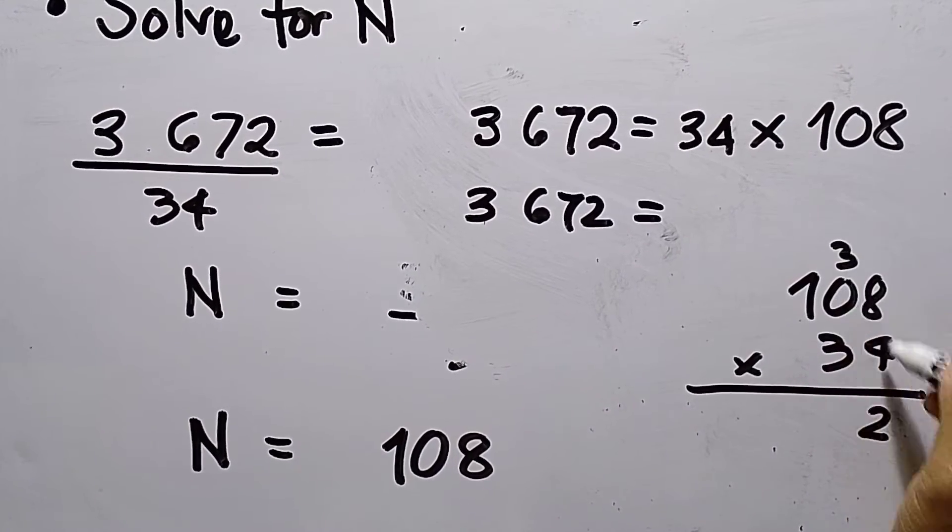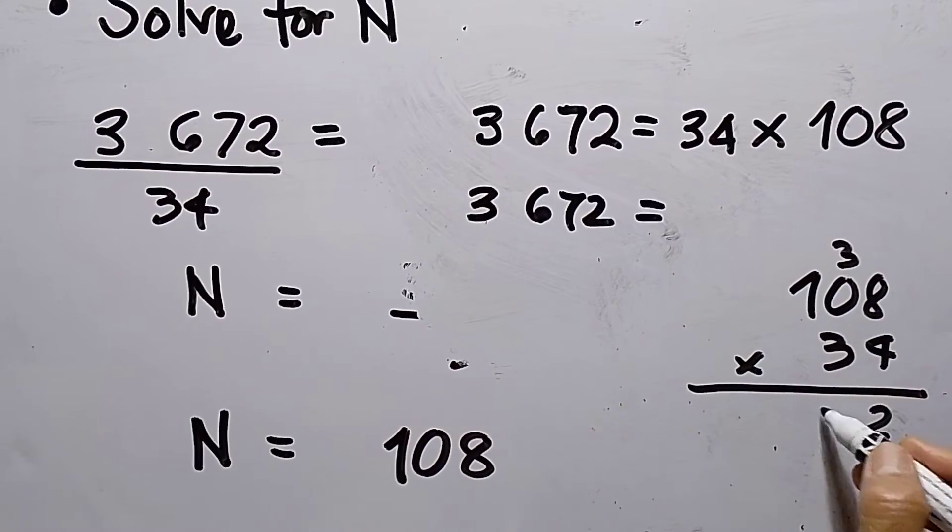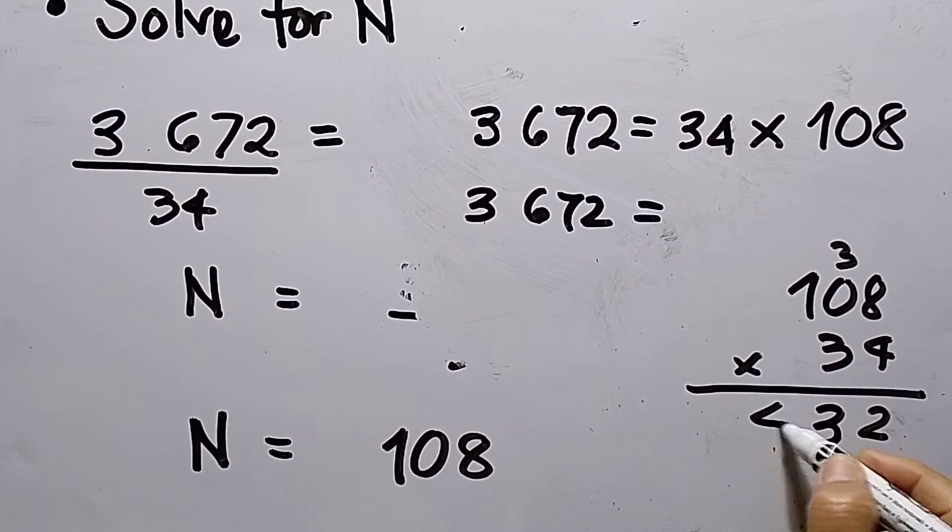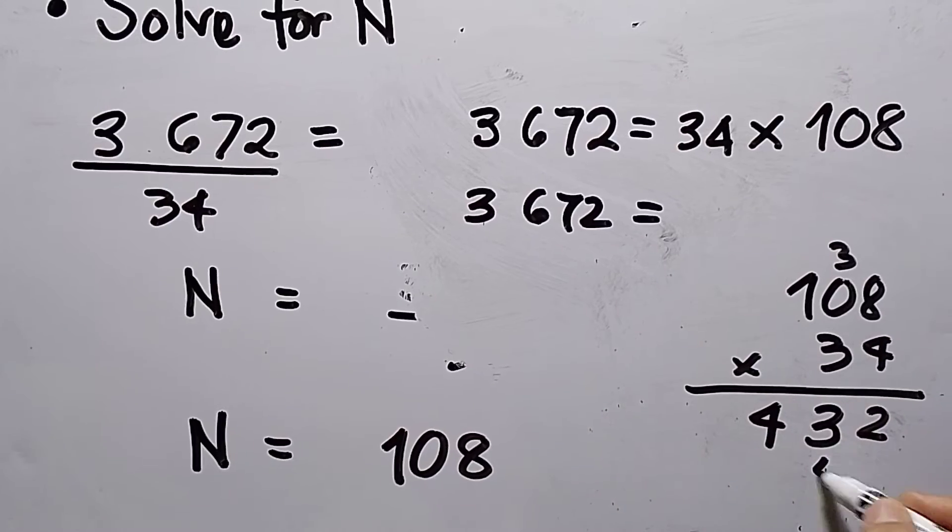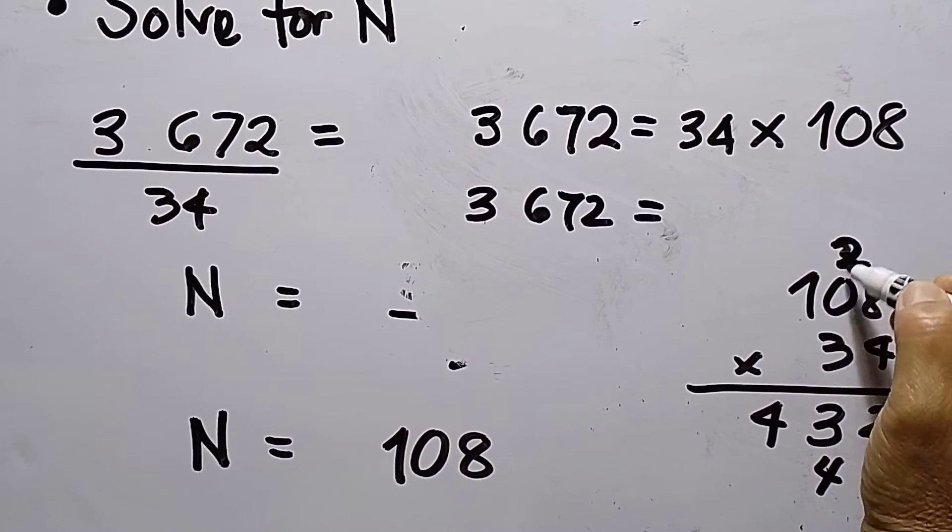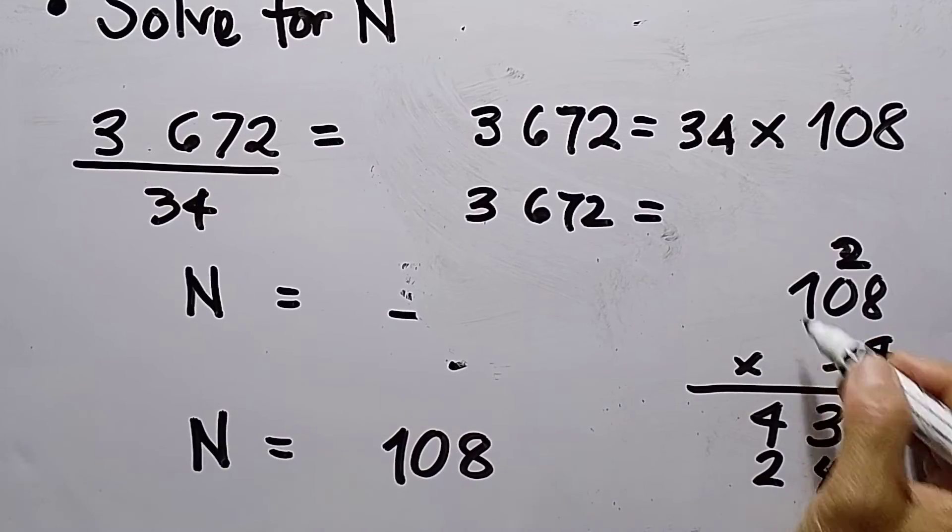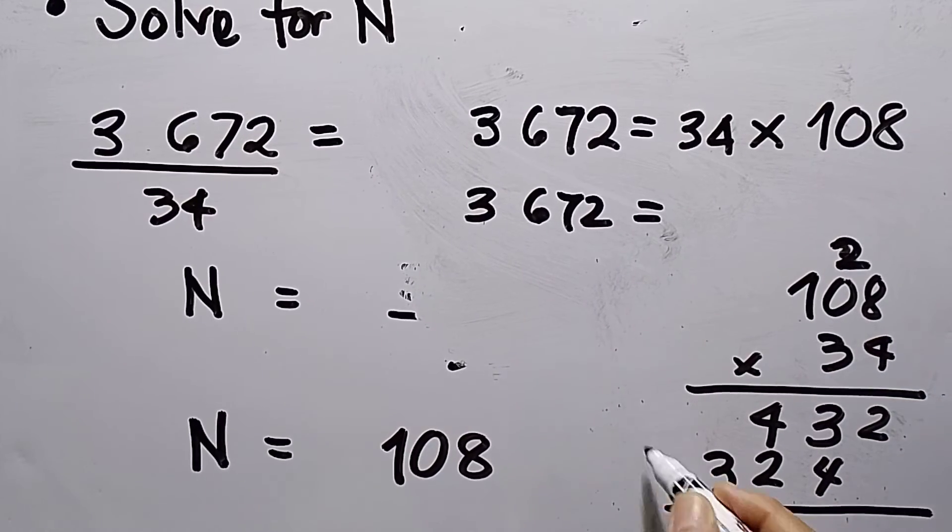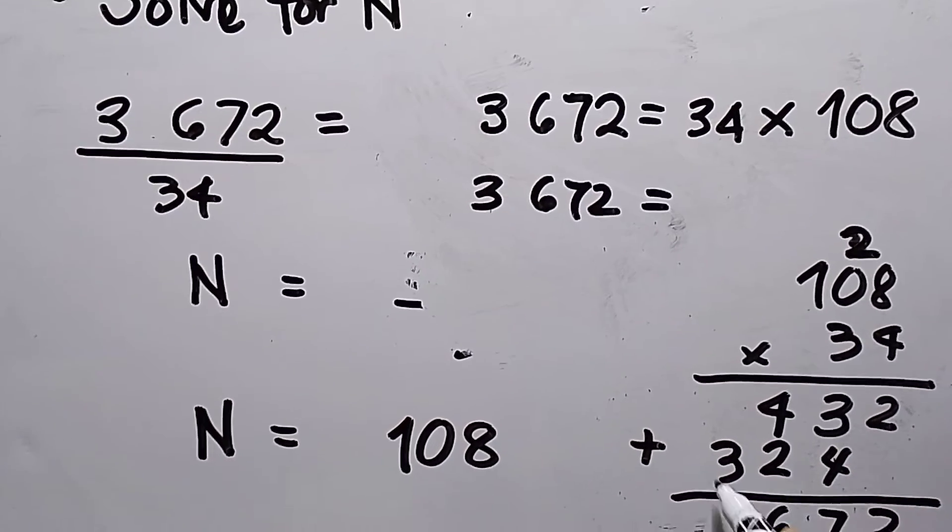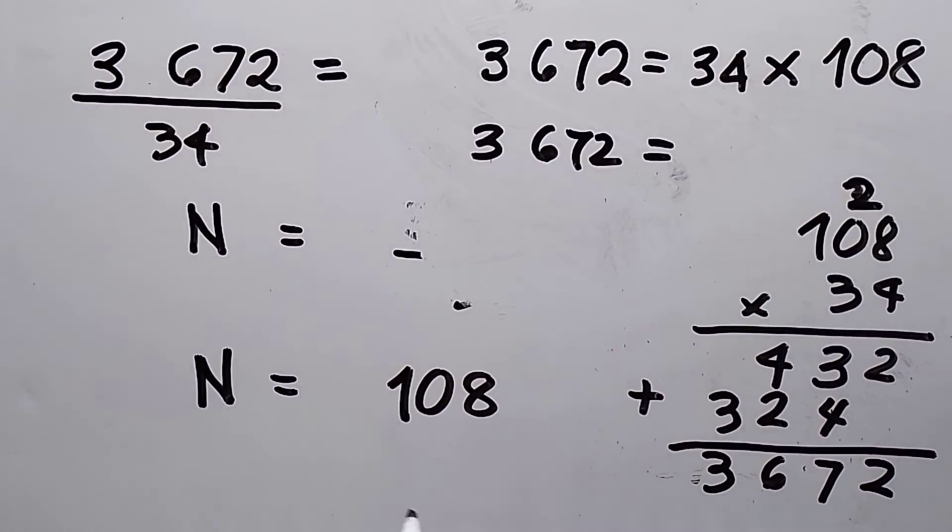So this will be 32 carry 3. 0 times 4 is 0 plus 3 is 3. Then 1 times 4 is 4. This one is 24 carry 2. 0 times 3 is 0 plus 2 is 2. Then 3 times 1 is 3. So bring down 2, this is 7, this is 6, and then bring down 3.